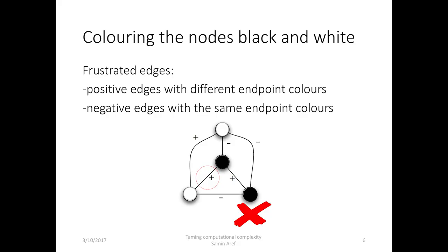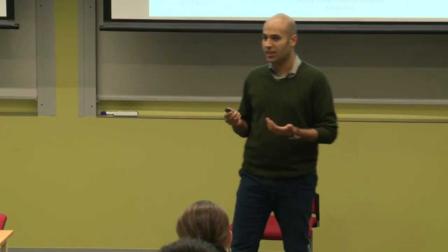In this network we can color the nodes, which leads to one frustrated edge. But finding the optimal solution in non-trivial examples is not easy. Suppose that the three-dimensional space of this lecture theater is our problem space. Then finding the optimal solution is as difficult as hitting a static invisible target that can be potentially anywhere in this lecture theater.